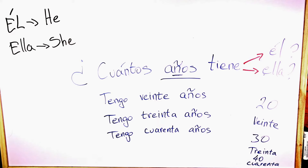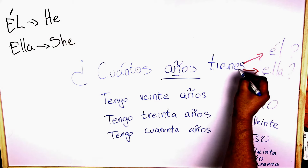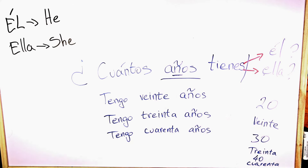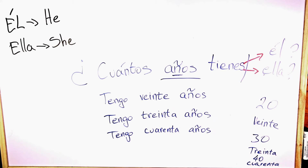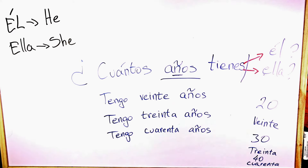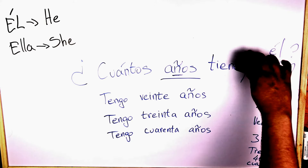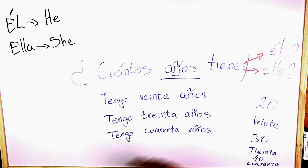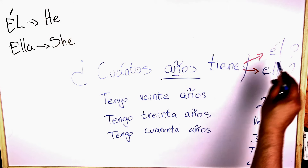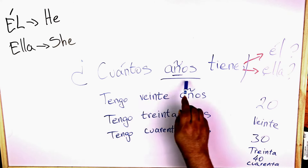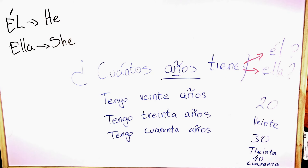Let's revise one more time. ¿Cuántos años tienes? — that's if you are asking the person in front of you. ¿Cuántos años tienes? Tengo treinta años — I'm 30 years old. Now, if you want to ask how old is he or how old is she, you get rid of the S — you're asking third person. So you ask ¿Cuántos años tiene él? — how old is he? And ¿Cuántos años tiene ella? Excellent. Perfecto. Well done. As you can see, it's very easy to learn.